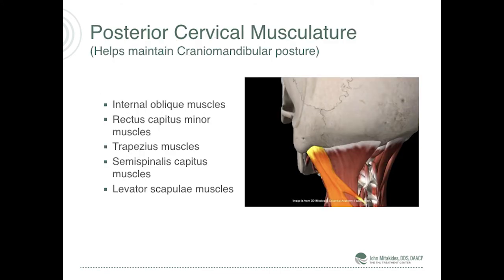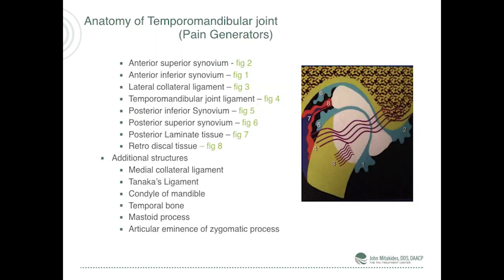The posterior cervical musculature helps maintain cranio-mandibular posture, which is very critical. These muscles — the internal oblique, rectus capitis minor, trapezius, semispinalis capitis, and levator — with the levator especially indicative of specific pain syndromes.